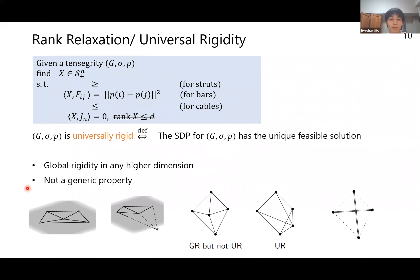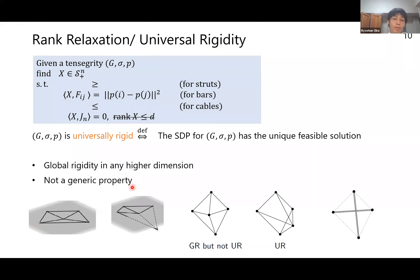As an example, the square framework is globally rigid in 2D space, but when lifted to R^3 there is a non-trivial flex, so it is not universally rigid. Somewhat surprisingly, another configuration is universally rigid. As a consequence, universal rigidity is not a generic property of a graph.